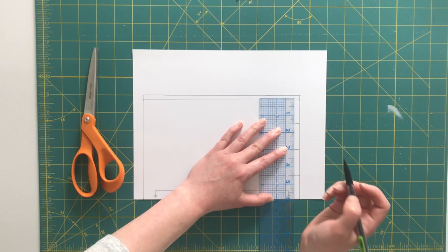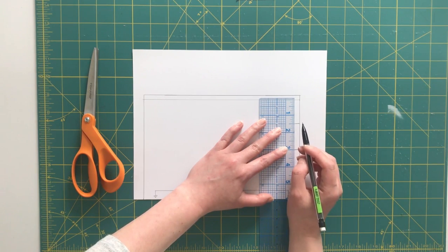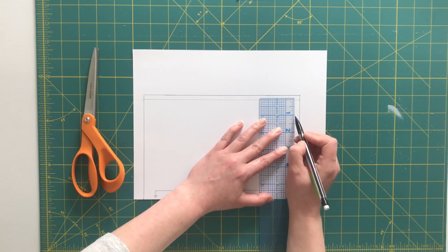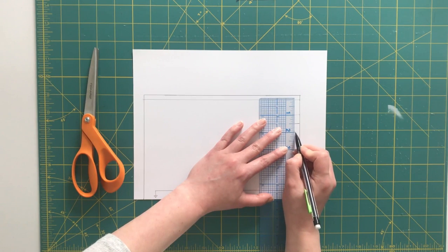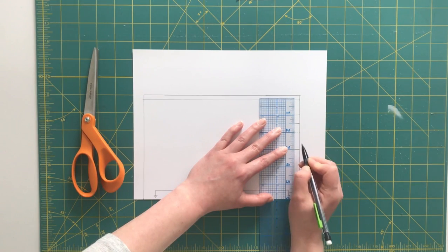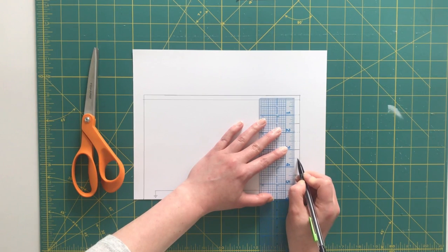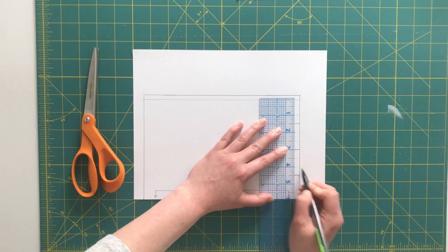These are going to be half inch pleats so I'm also going to mark with a dashed line where the rest of the fabric for my pleat is going to take up. So I'm going to mark at one inch, and again at two inches. Two and a half, three and a half, four, and five.